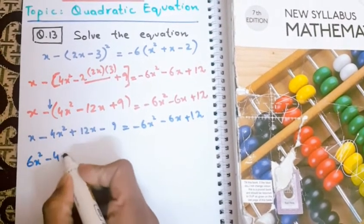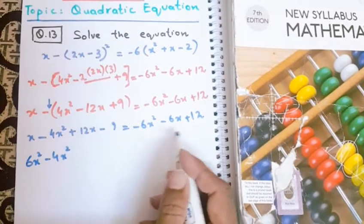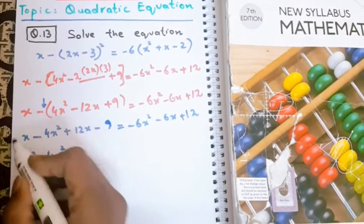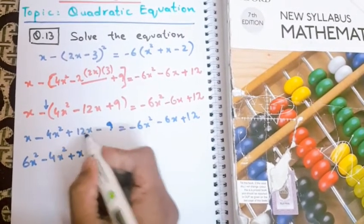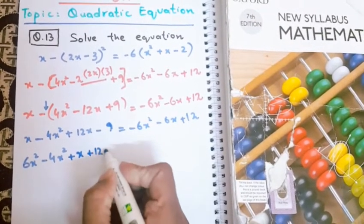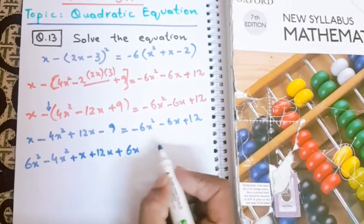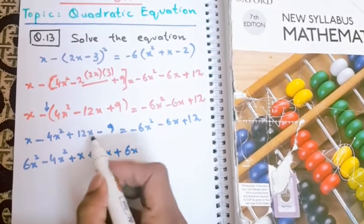Now it's the turn of x. Positive x is already here. Positive 12x is already here, but minus 6x will come here and turn into positive 6x. Now we will talk about the constant things. Minus 9 is already on the left side, its sign will stay as it is. Plus 12 will come on the left side.